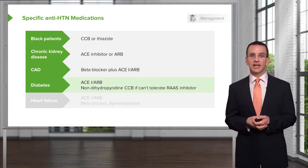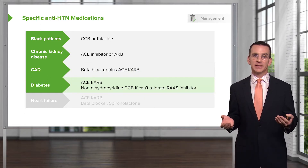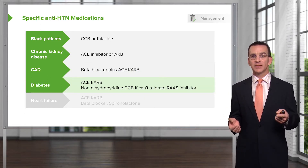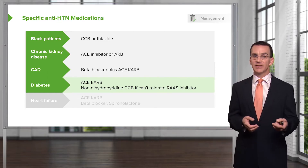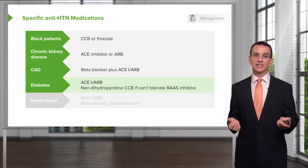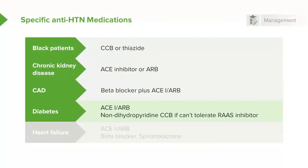In diabetes, start an ACE inhibitor or an ARB because it can help with nephropathy. Interestingly, remember that patients who don't have nephropathy don't necessarily benefit from an ACE or an ARB when they have diabetes. So it's really only after they develop nephropathy, or when they have diabetes and hypertension, that you introduce an ACE or ARB.